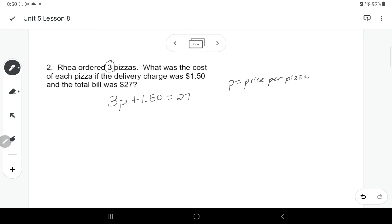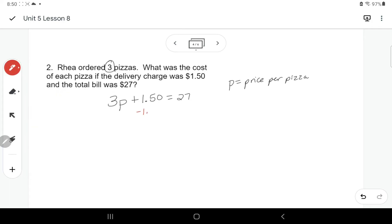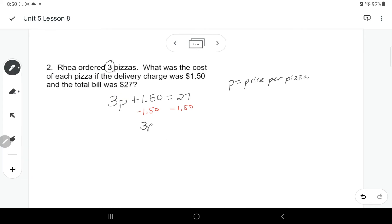And I'm just going to clarify that my P stands for the price per pizza. Now this is an equation that we can solve. So I'm going to use opposite operations. Subtract $1.50 from both sides.